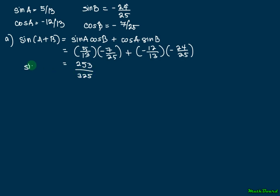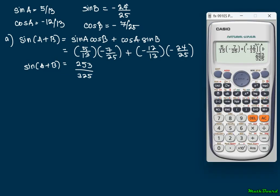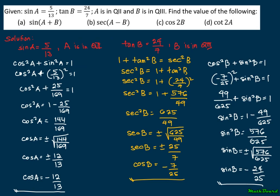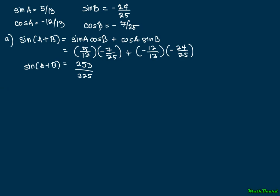This is the value of sine(A + B): 253 over 325. Next is secant(A minus B). To solve for secant(A − B), we use the reciprocal relationship: secant(A − B) = 1 over cosine(A − B). So we just compute cosine(A − B) first, then take the reciprocal to get secant(A − B).